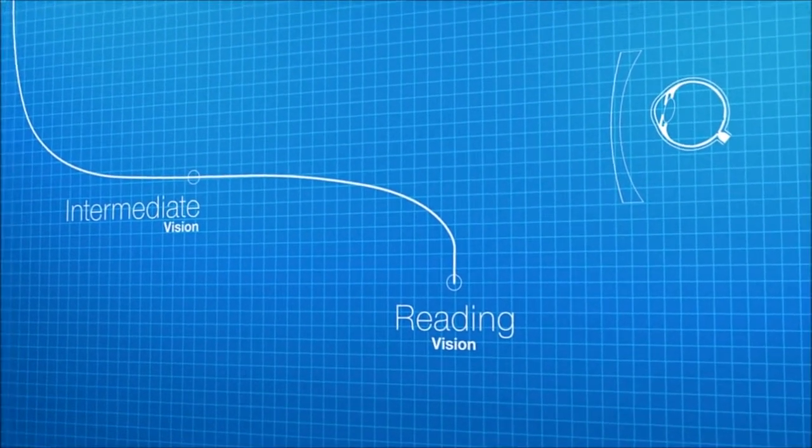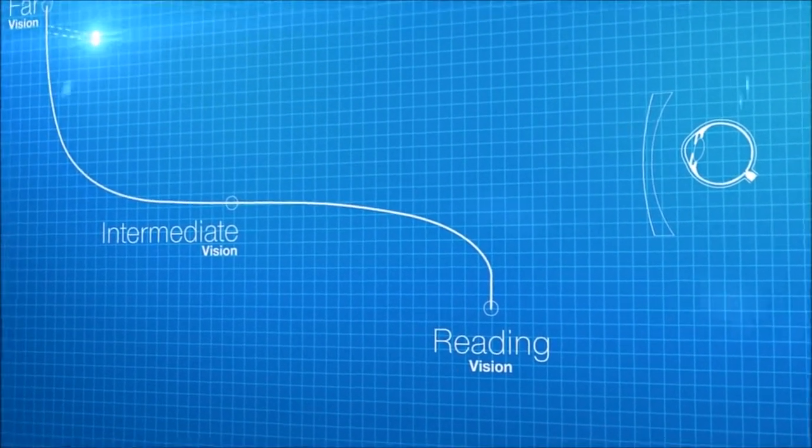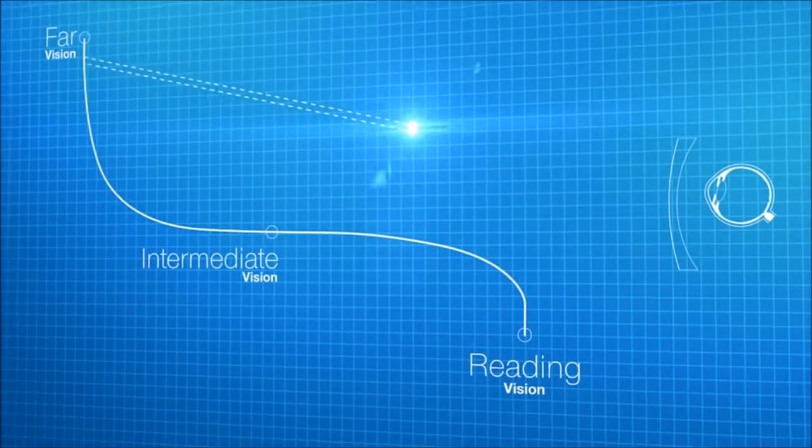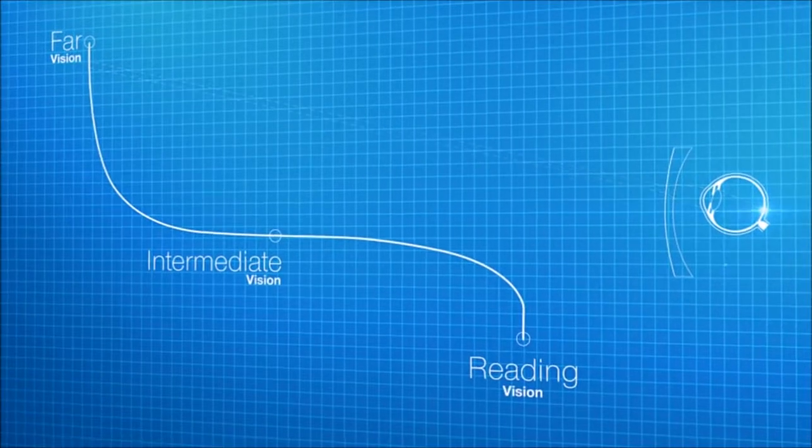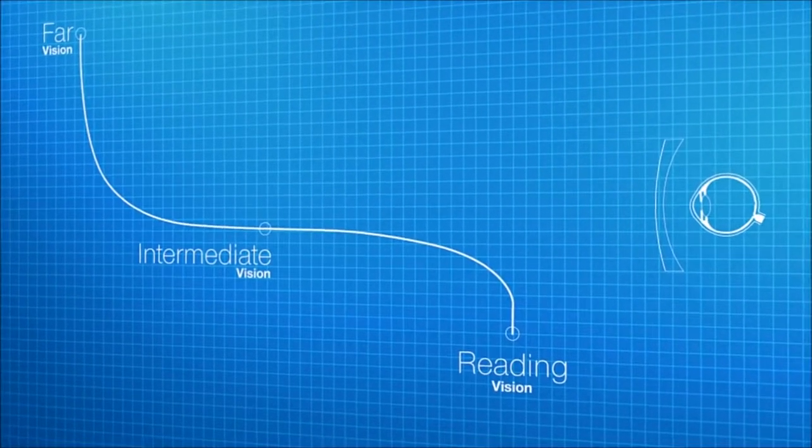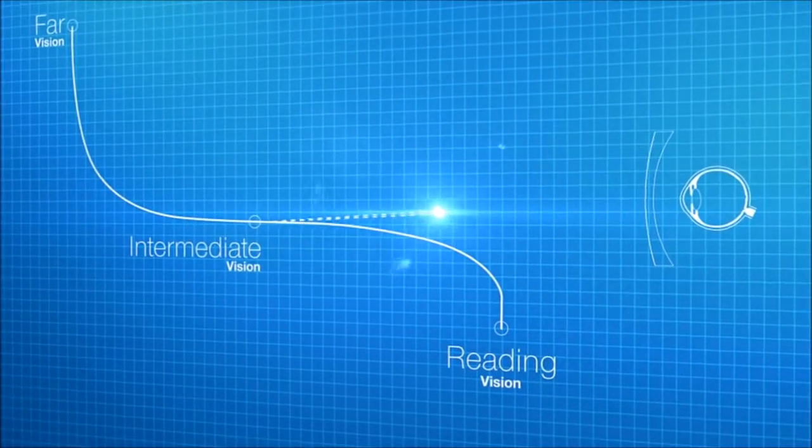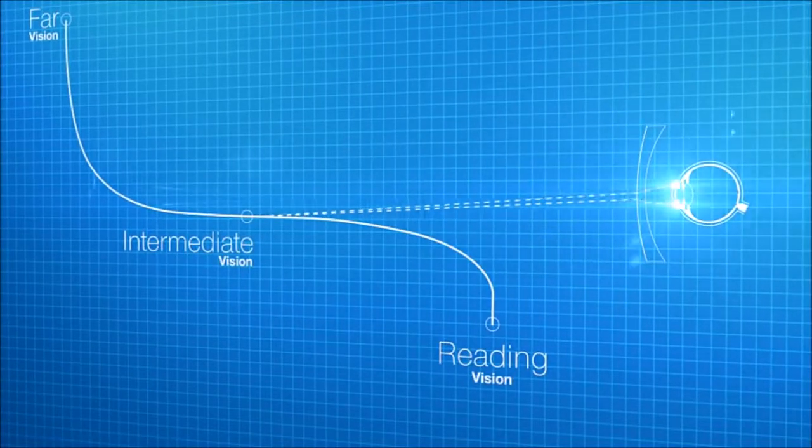In the upper part of the lens, designed for far vision, the passage of rays coming from distant objects is simulated. In addition, the calculation takes into account the vertical movement of the eye and simulates the rays representing the intermediate vision.